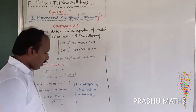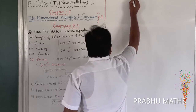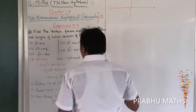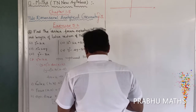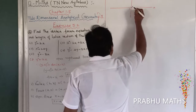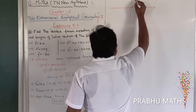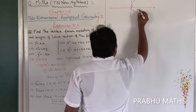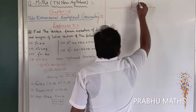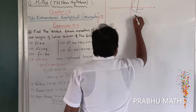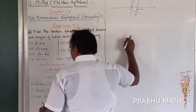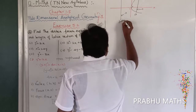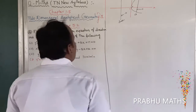Now let us draw the diagram. Draw the graph sheet with x and y axes. The vertex is at 0 comma 0, labeled V. This is a right-word open parabola. The focus is at 4 comma 0. The latus rectum is drawn through the focus. The directrix is on the opposite side at x equal to minus 4. Diagram is completed.